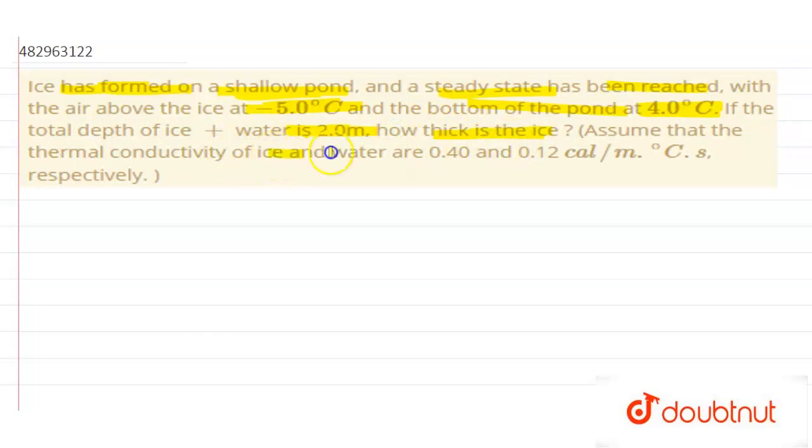Thermal conductivity of ice and water are given: 0.4 and 0.12 calories per meter degree Celsius. So what do we need to do?